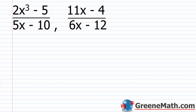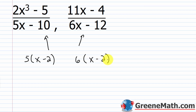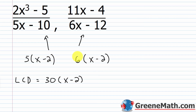Next example: denominators are 5x − 10 and 6x − 12. Factoring: from 5x − 10 I pull out 5, leaving x − 2. From 6x − 12 I pull out 6, leaving x − 2. So for the LCD: I have a 5 and a 6 — since 6 is 2 times 3 and 5 is prime, 5 times 2 times 3 gives 30. And x − 2 occurs once in each factorization. So the LCD is 30(x − 2), and I would leave it in factored form.